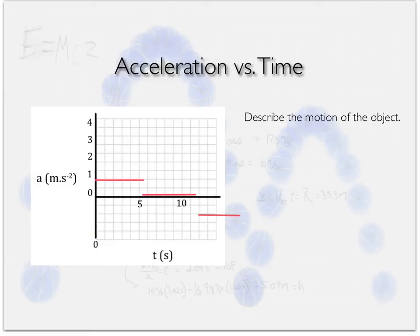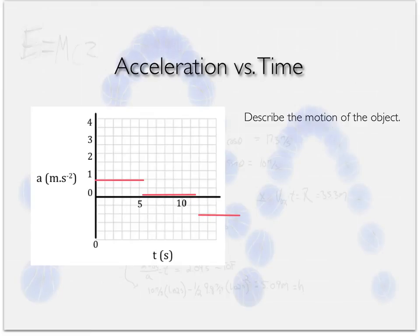On this acceleration-time graph we're asked to describe the motion. Section one shows positive acceleration — the object is accelerating forwards, speeding up; that's constant positive acceleration. Section two shows zero acceleration — no change in velocity, so the object maintains its current velocity at constant speed. Section three shows negative acceleration — the object is accelerating in the negative direction, meaning it's likely slowing to a stop.